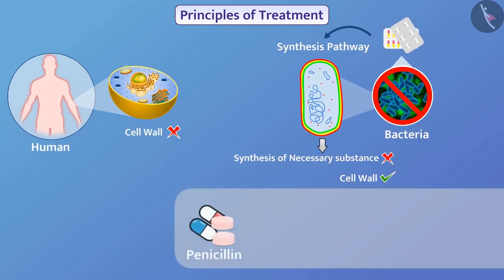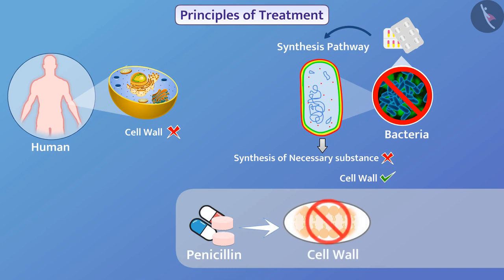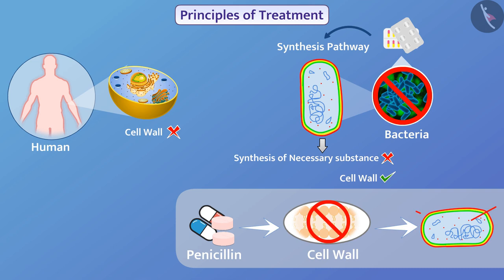The medicine penicillin inhibits the process of cell wall synthesis, due to which bacteria are unable to synthesize the cell wall, their cell wall becomes thin, and they are killed easily. Essential processes that occur in bacteria do not occur in humans, so medicines have no effect on humans. Because this medicine only prevents the essential process of bacteria, its effect will be only on bacteria and not on other microorganisms.